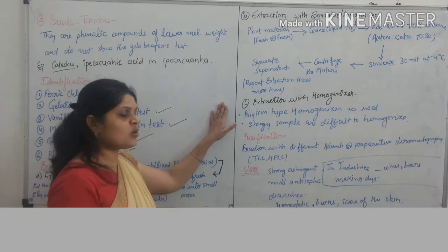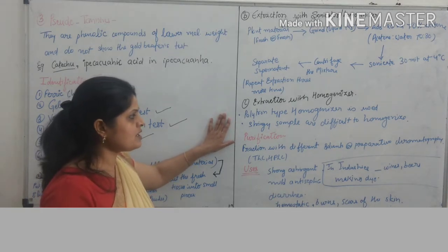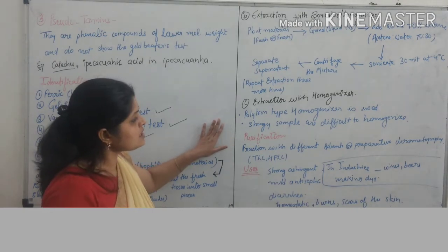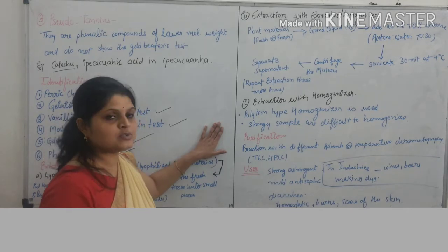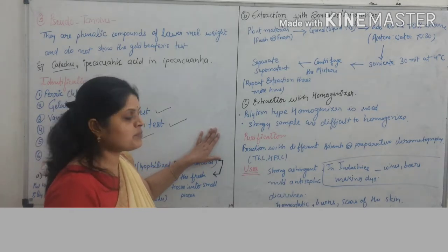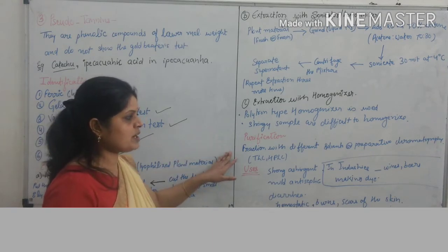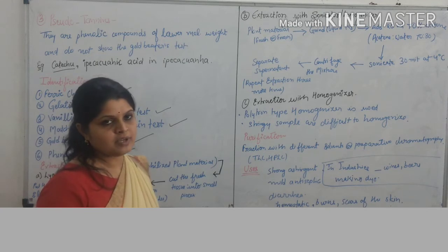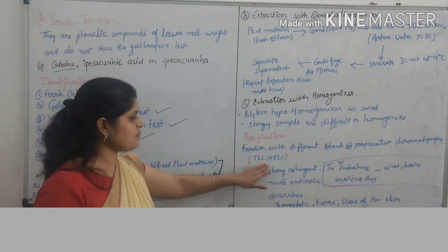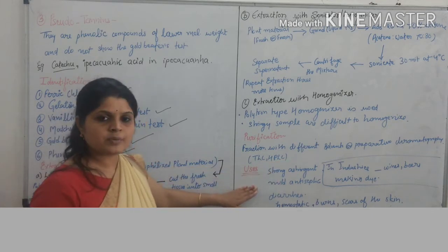For extraction with homogenizers, a Polytron-type homogenizer is used, though this method still presents some difficulty in homogenization. Regarding purification of tannins, tannins are purified by preparative chromatography such as thin-layer chromatography and high-performance liquid chromatography.